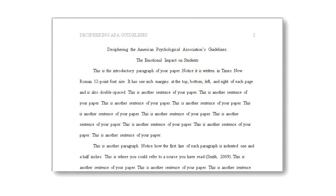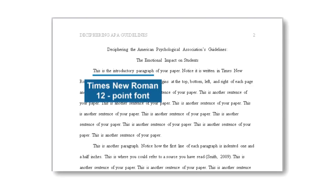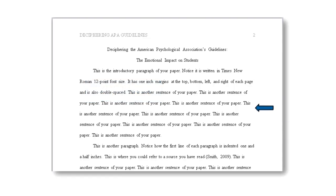Let's start with the basics of formatting. APA recommends using 1-inch margins on the top, bottom, left, and right of each page, and also recommends using Times New Roman 12-point font. Your entire paper should be double-spaced. Page numbers should appear in the top right-hand corner, and all pages should be numbered, including the title page and your reference list.